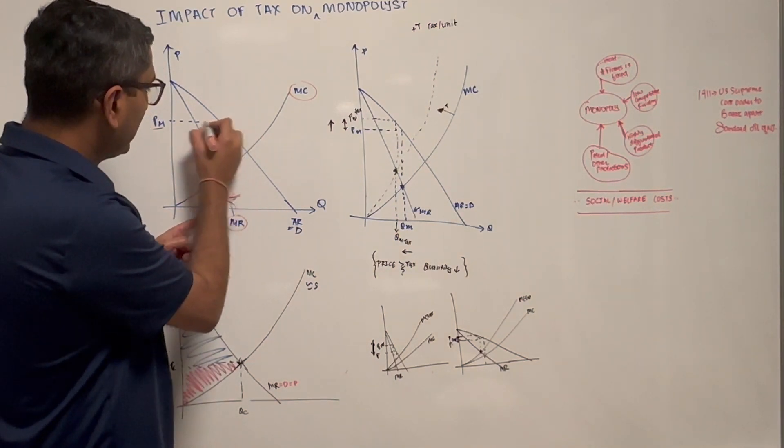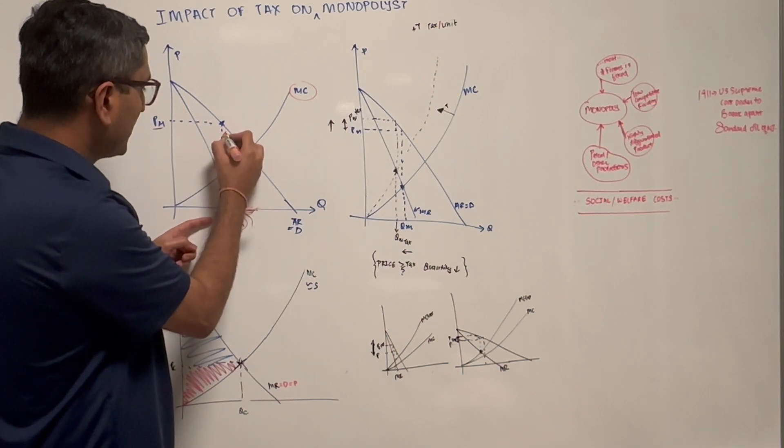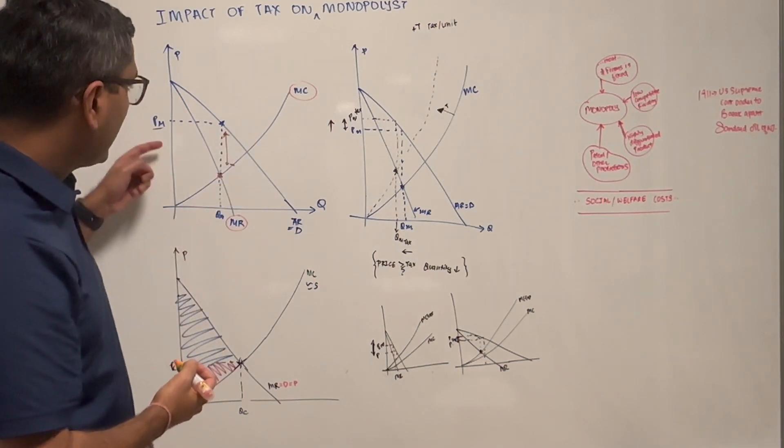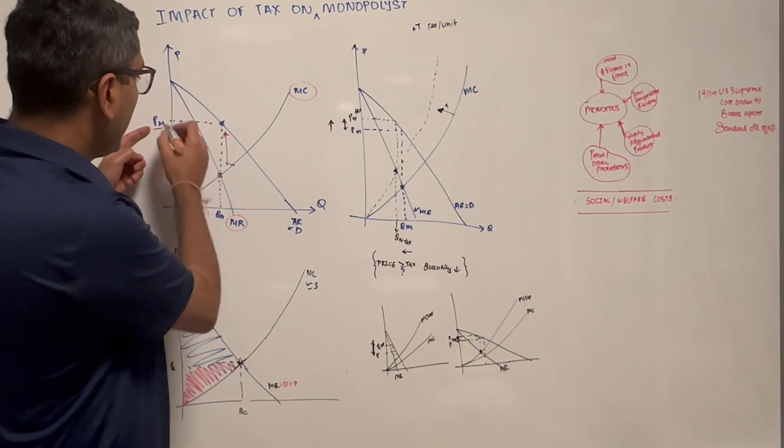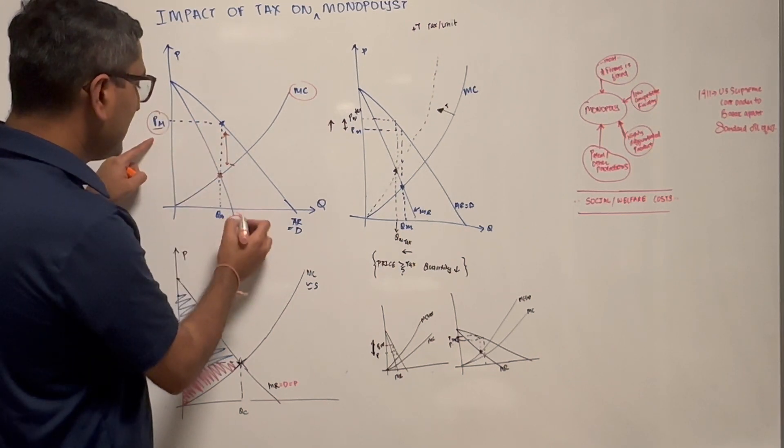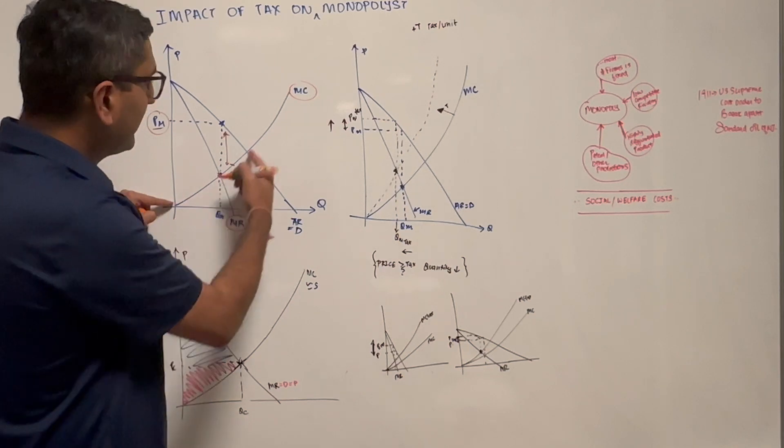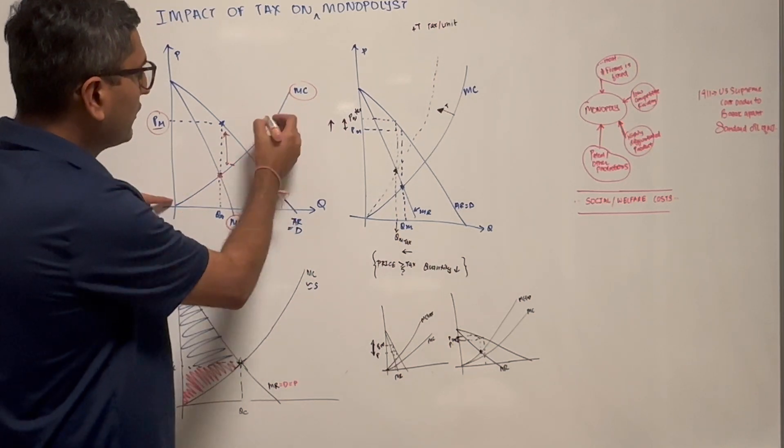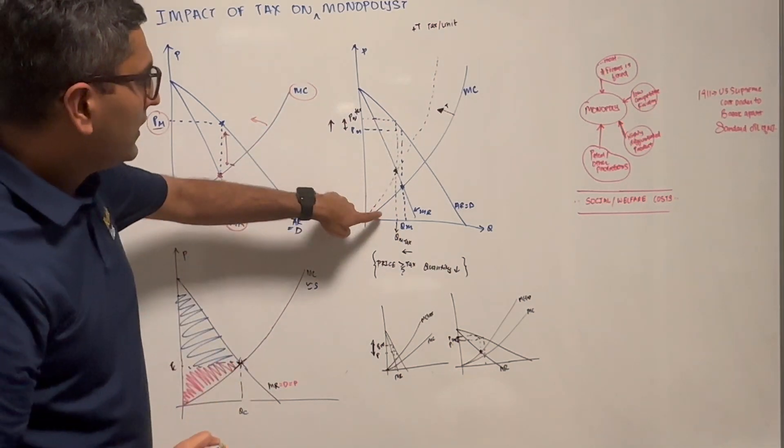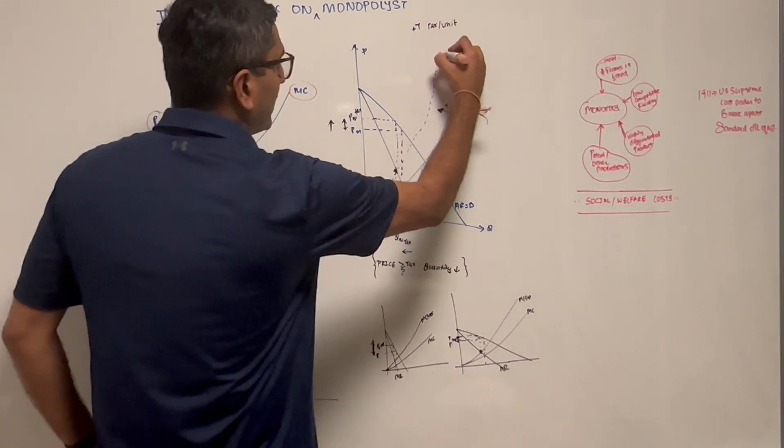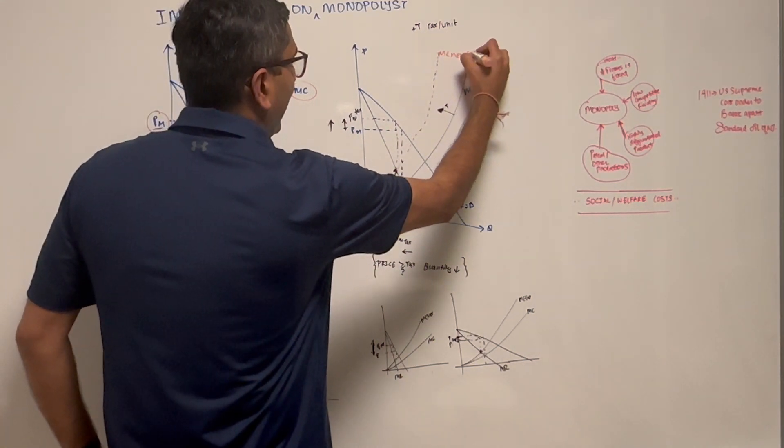So this is the marginal cost, but they will set the price by this much higher. They'll get the quantity and the price. When they start to see a tax getting added, basically the tax will shift the marginal cost curve up. Here I've drawn the new marginal cost with the tax.